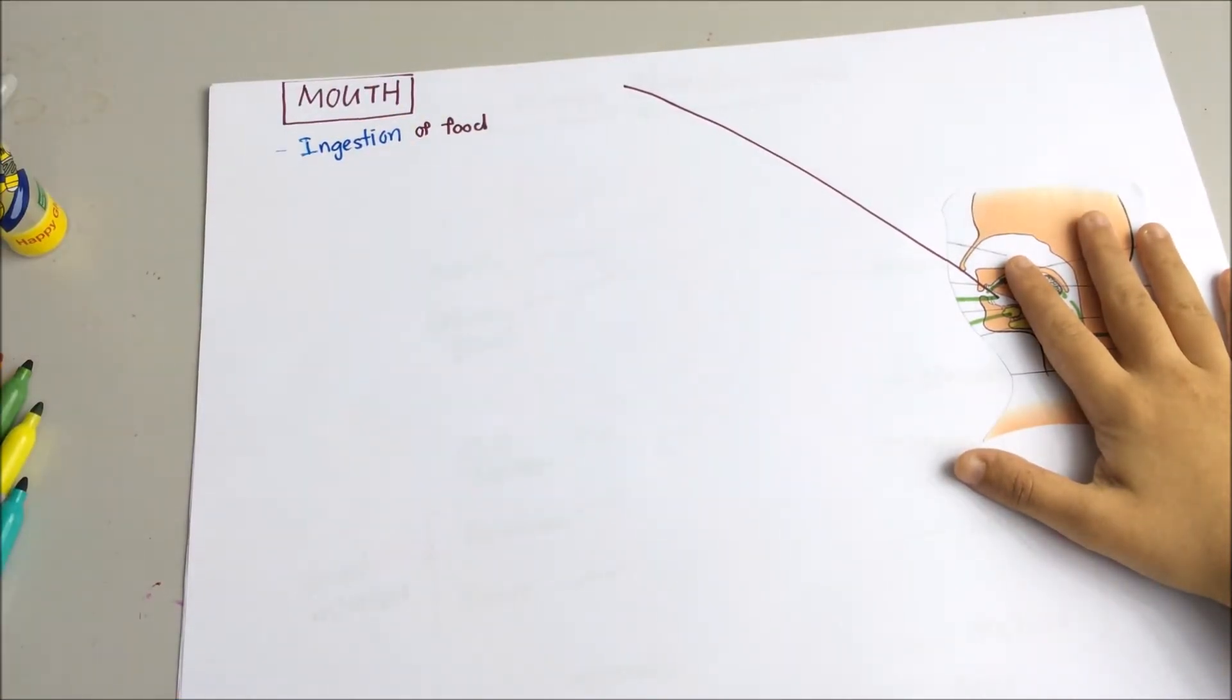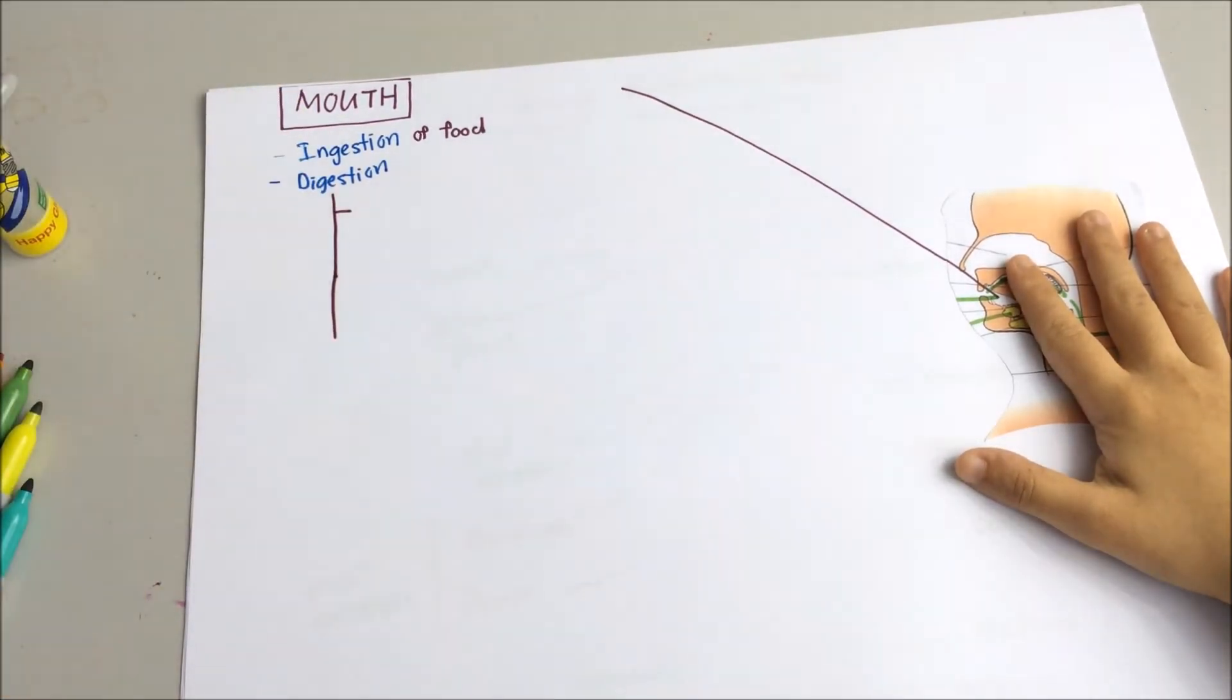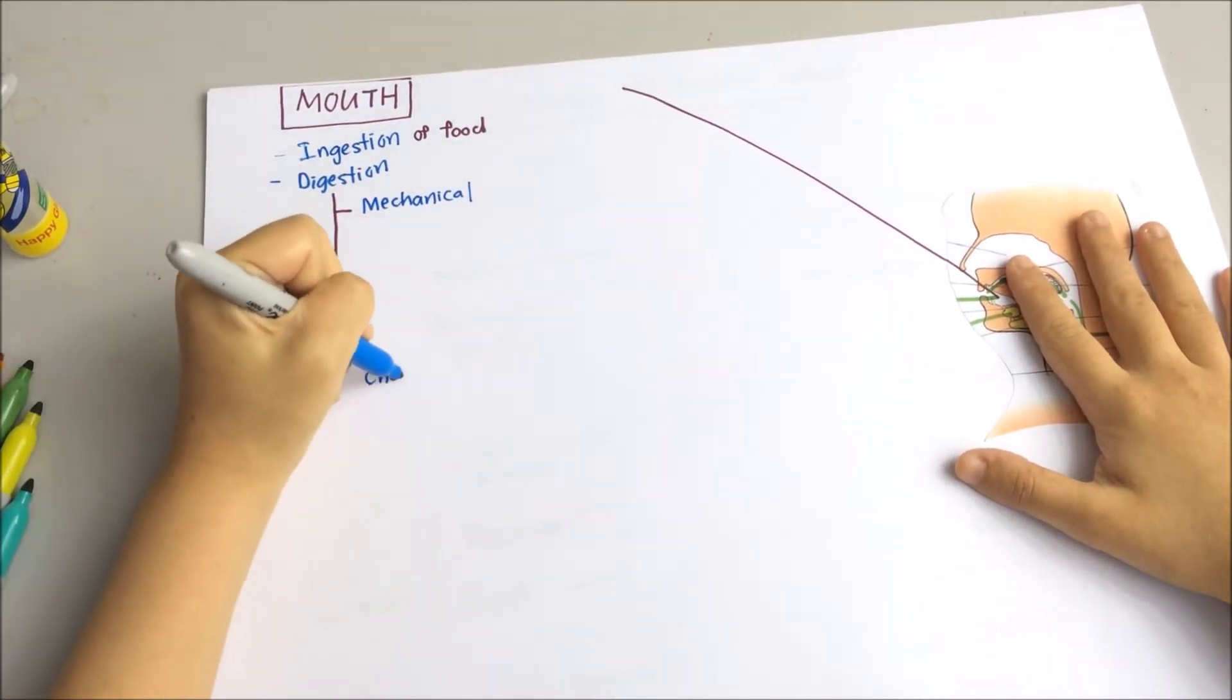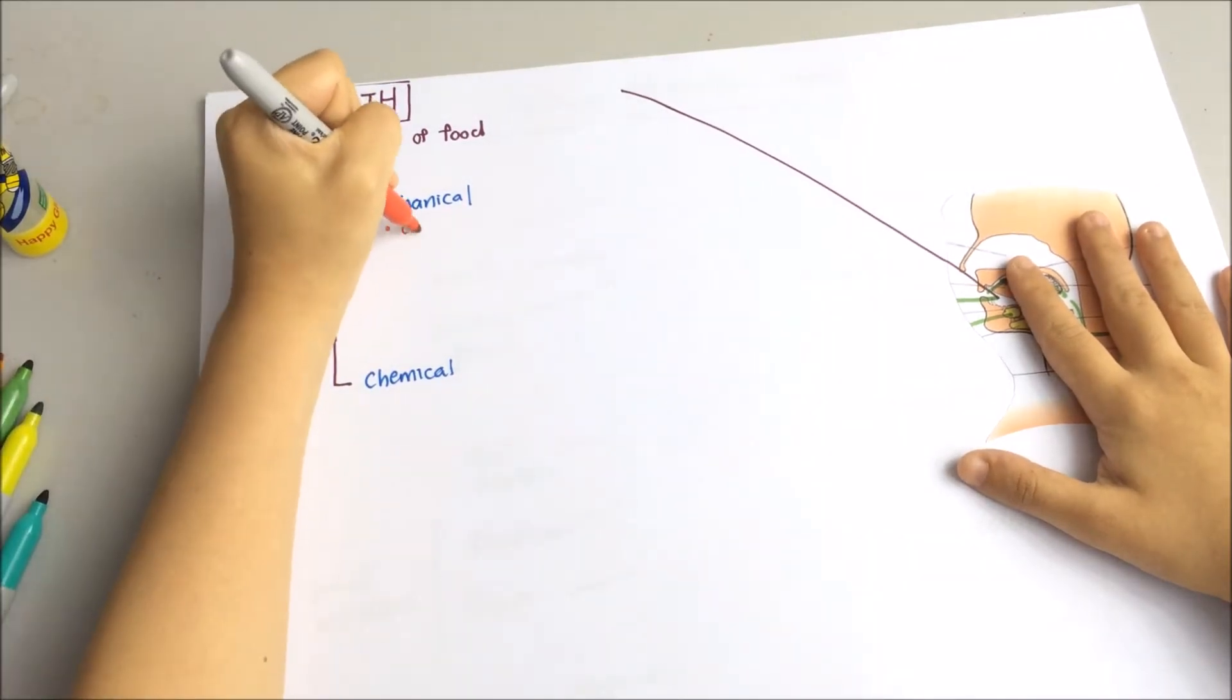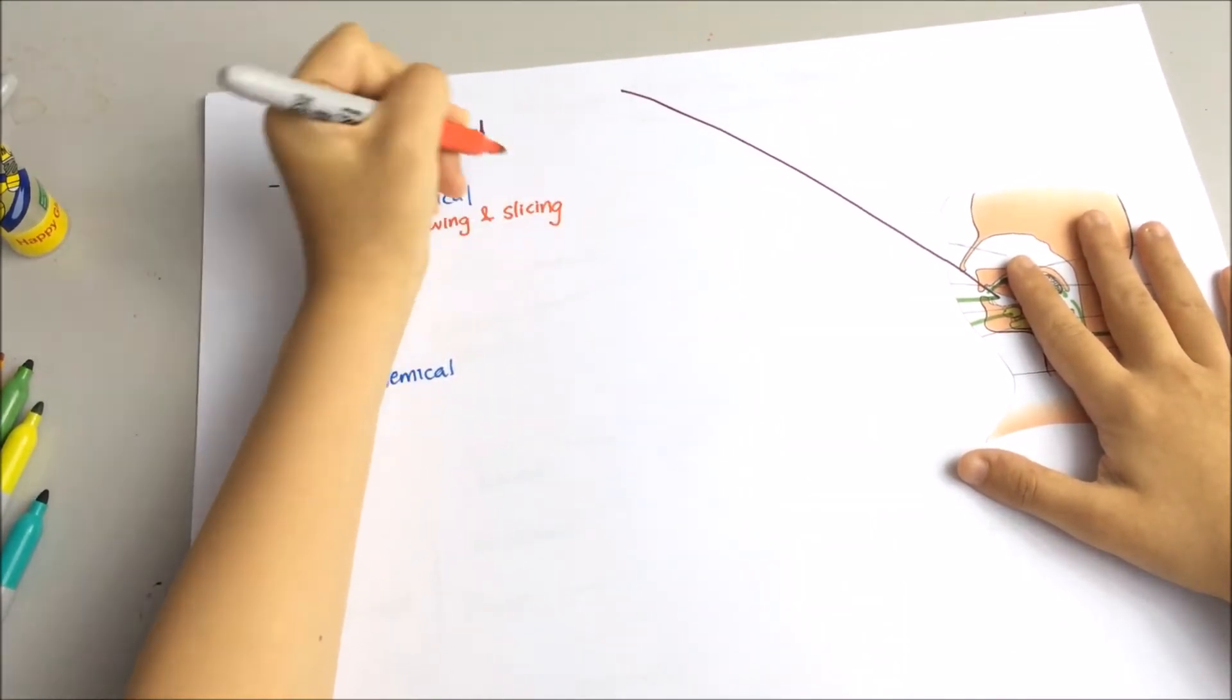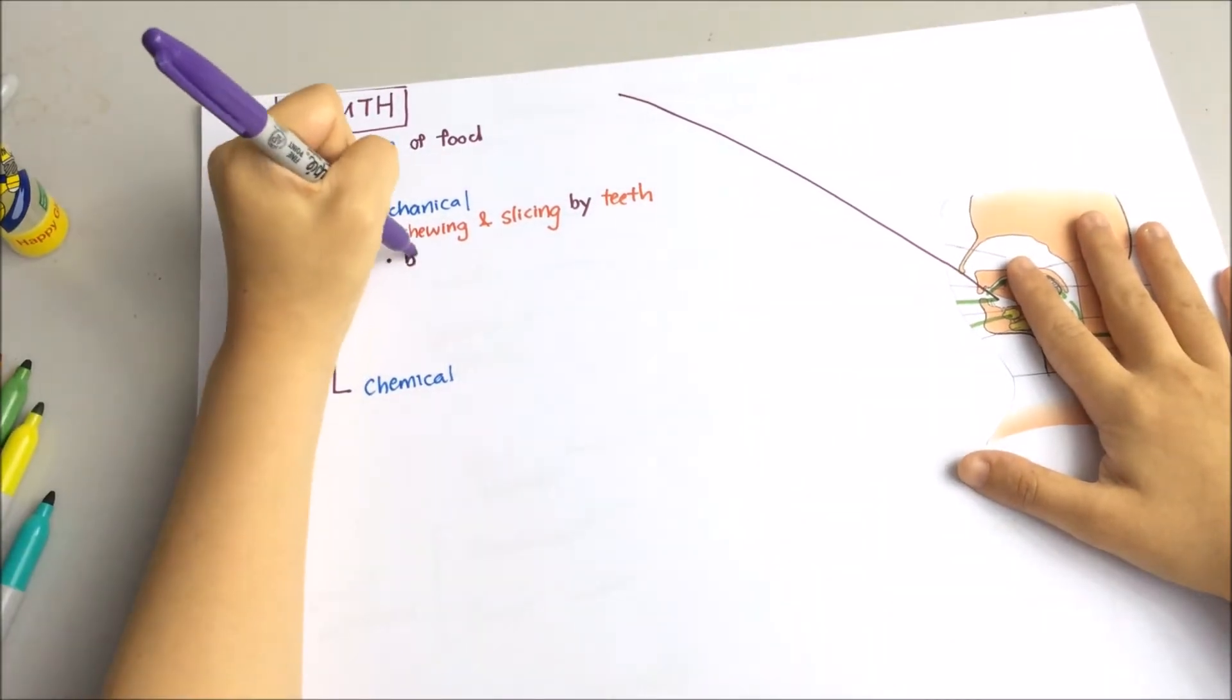There are two types of digestion which we'll be talking about here. First would be the mechanical digestion. Second would be chemical digestion. So what do we mean by mechanical digestion? During mechanical digestion, your teeth will start breaking down the larger food pieces into smaller bits. This is to increase the surface area for enzyme action.